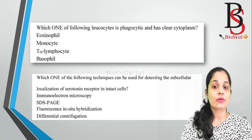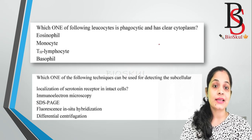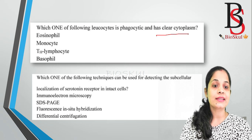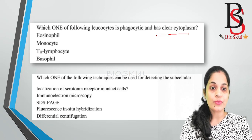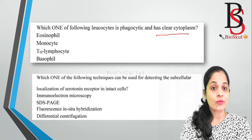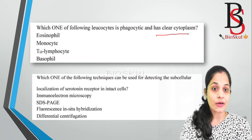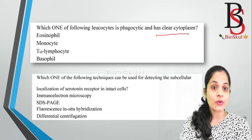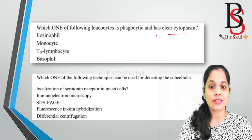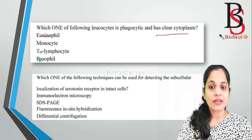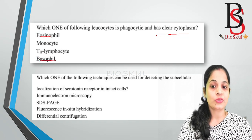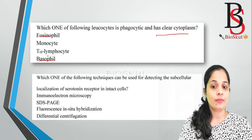Question number one: which one of the following leucocytes is phagocytic and has clear cytoplasm? Leucocytes are of two types: granular leucocytes and agranular leucocytes. Clear cytoplasm means it's an agranular leucocyte. Agranular leucocytes are monocyte and lymphocyte. So let's eliminate eosinophil and basophil. The correct option will be either monocyte or lymphocyte.